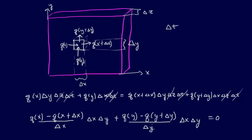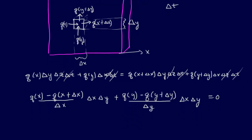And so you can see, this is basically the definition of the derivative. And so if I take the limit as delta x goes to zero, and the limit as delta y goes to zero, and I simplify this out, what I'm going to get is the partial of q with respect to x. So minus the partial of q with respect to y is equal to zero.